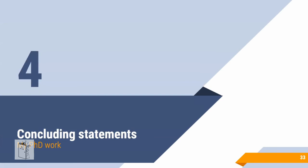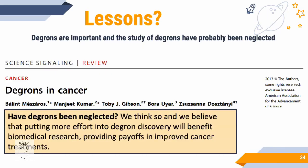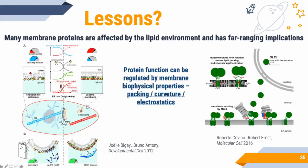To conclude: degrons are a somewhat neglected area, but as stated in a key paper, their discovery could have significant benefits in cancer therapeutics. In recent years, researchers are trying to hijack the ubiquitin machinery — this protein degradation mechanism — to selectively degrade disease-causing proteins. I hope you can also appreciate that membrane proteins are highly dynamic; they can sense lipids in the environment, which affects protein binding, protein activity, and whether proteins act as transcriptional factors.